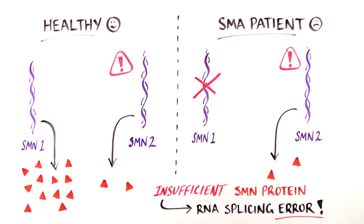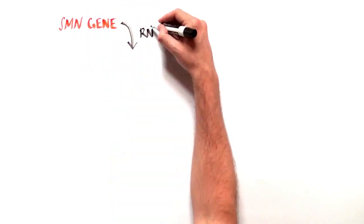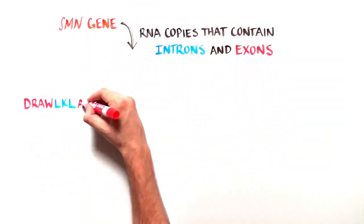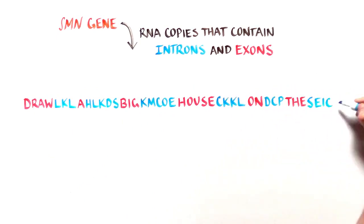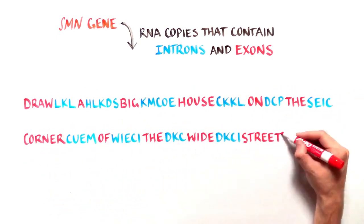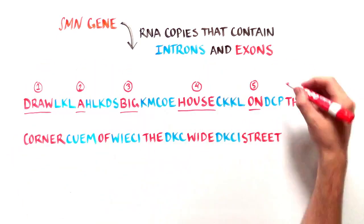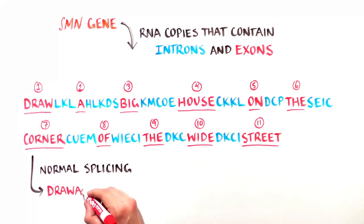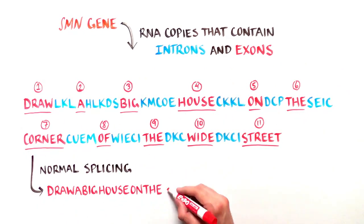Remember, that's the process of forming a coherent RNA message by removing the gibberish letters, or introns. But what is this mistake and how does it cause SMA? Let's say the SMN gene generates RNA copies made up of introns and exons. Normal RNA splicing would delete the introns — the gibberish letters in blue — and leave only the exons, the red letters, generating the following message.